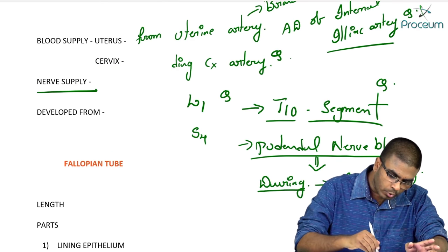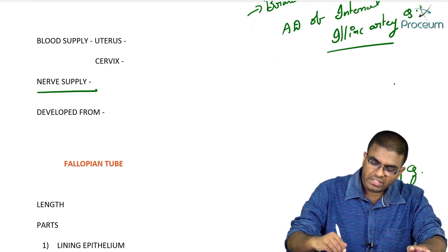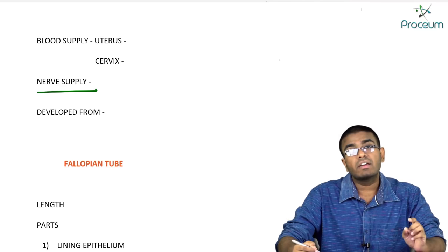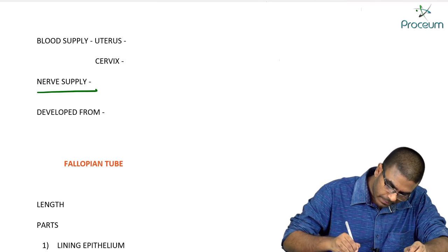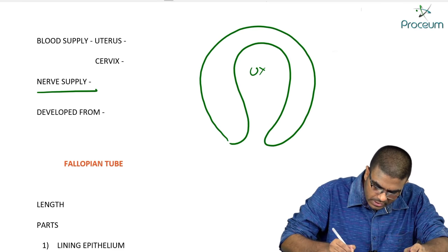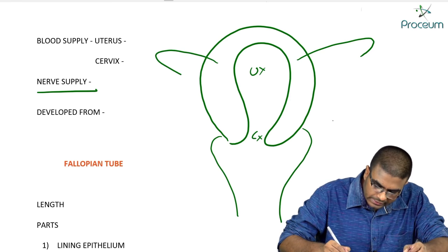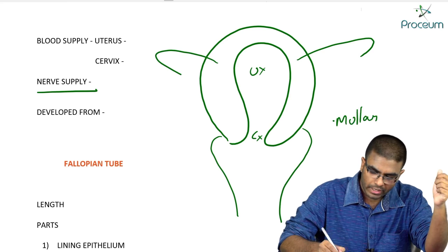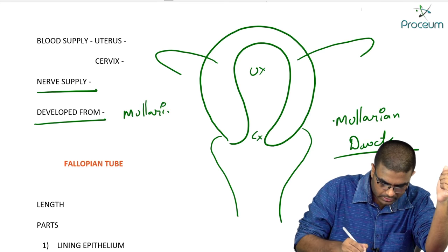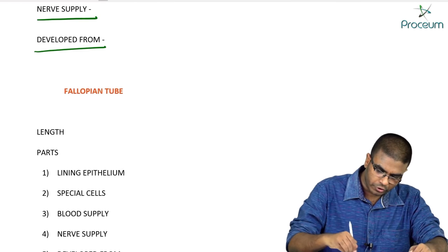The uterus, cervix, fallopian tubes, and the upper two-thirds of the vagina are all derived embryologically from the Müllerian ducts.